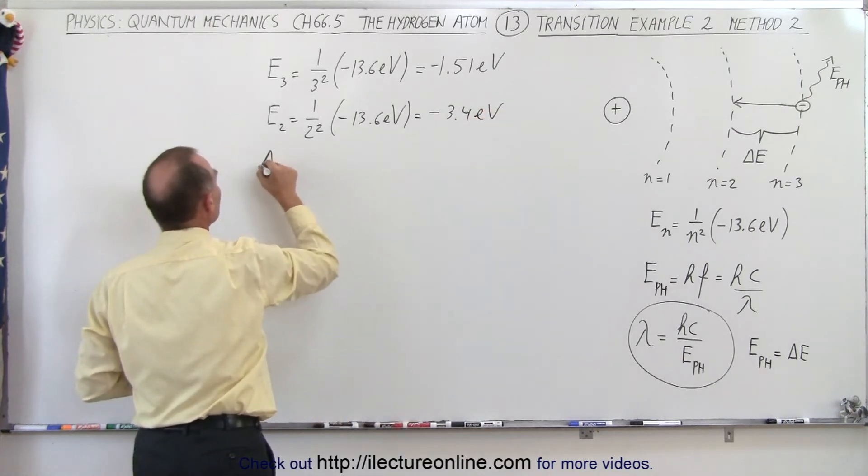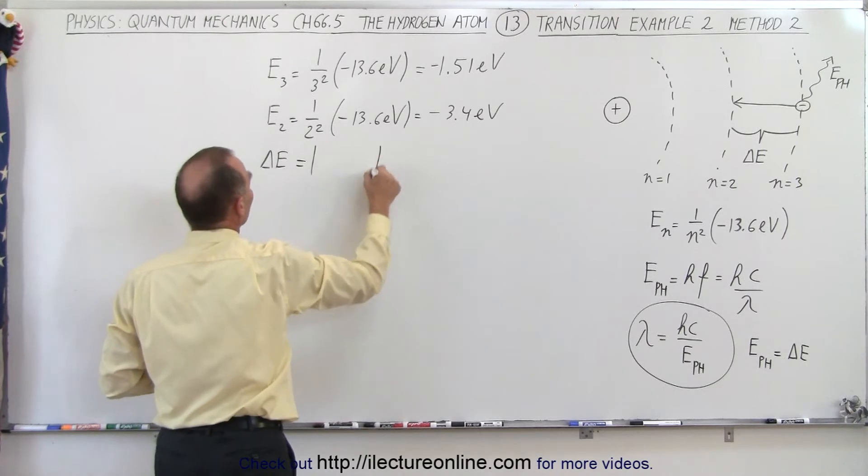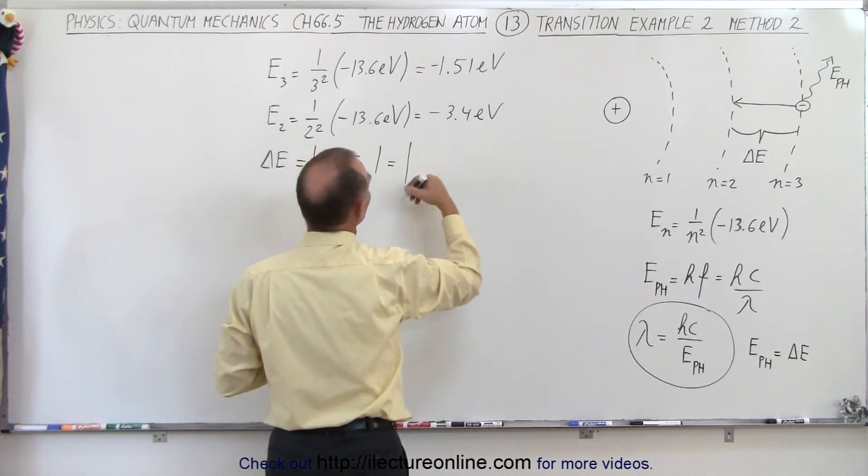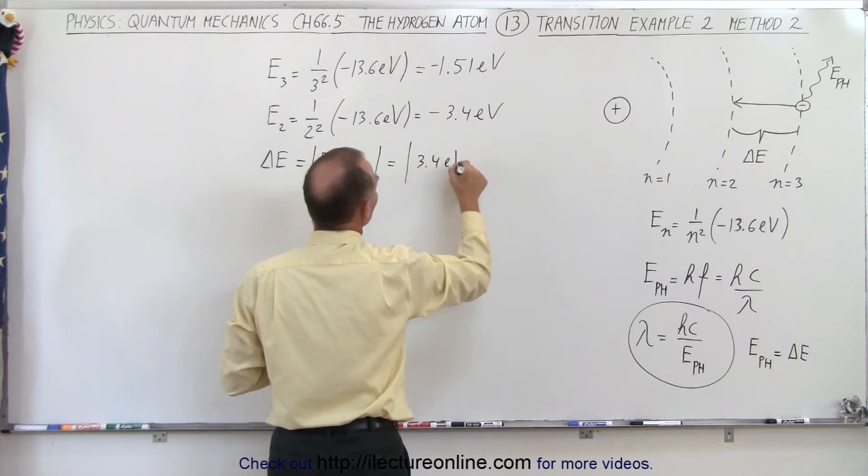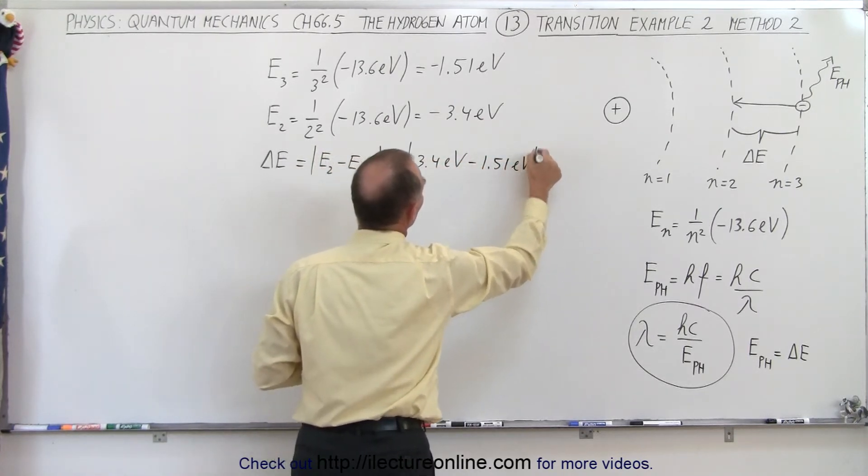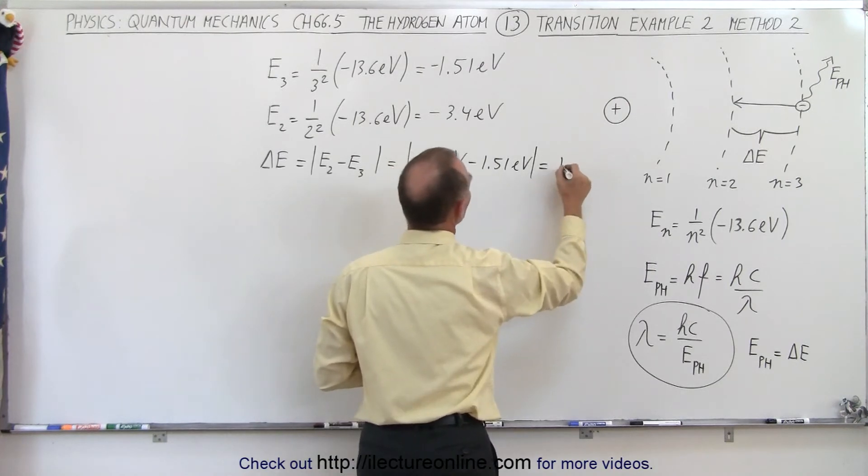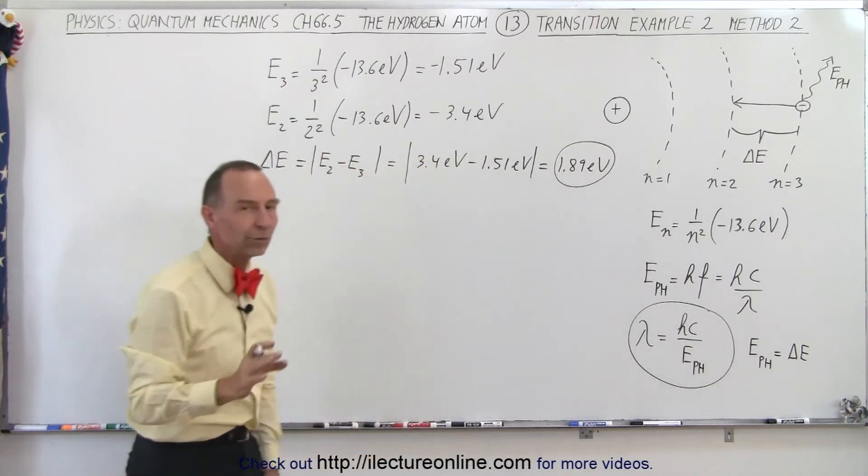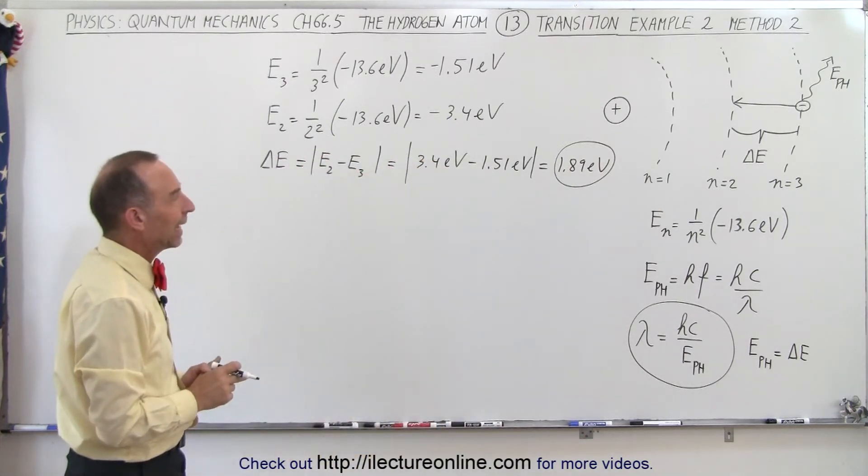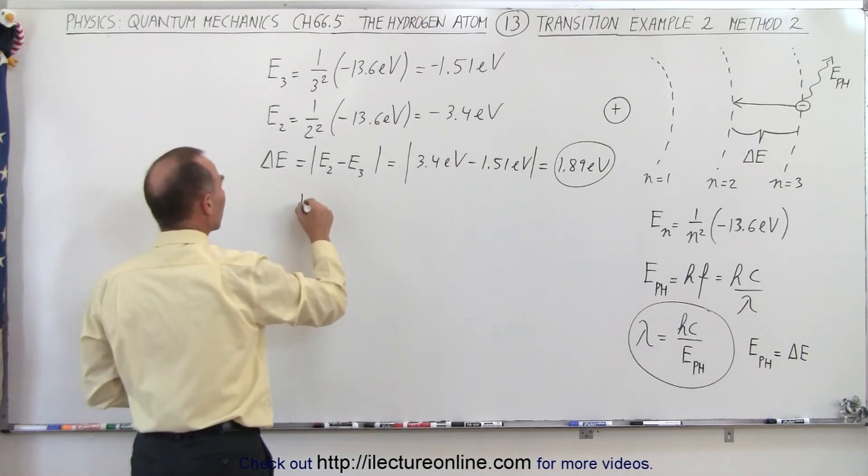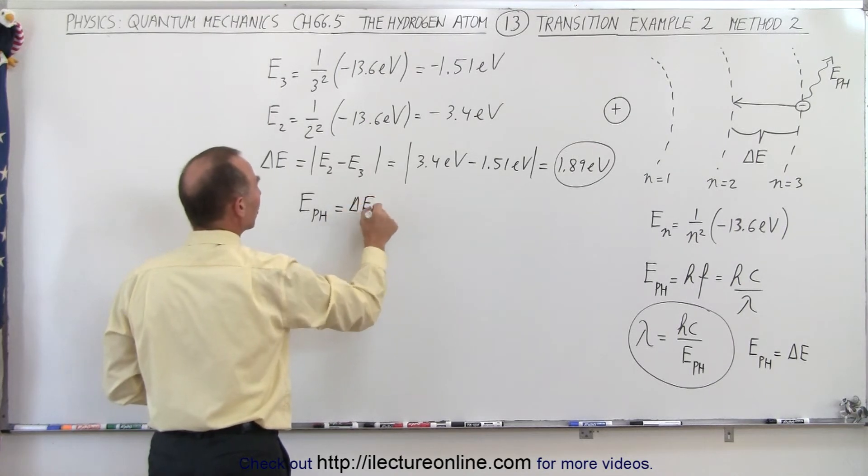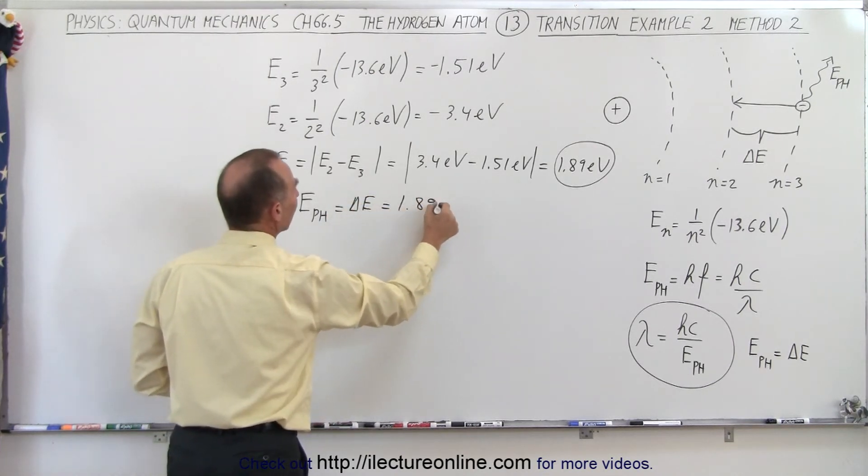So the difference in the energy, we want to find the magnitude of that difference. That would be E2 minus E3, which is equal to the magnitude of 3.4 electron volts minus 1.51 electron volts, which equals 1.89 electron volts. That's the energy difference between the two levels, and that becomes equal to the energy of the photon. So the energy of the photon released equals 1.89 electron volts.